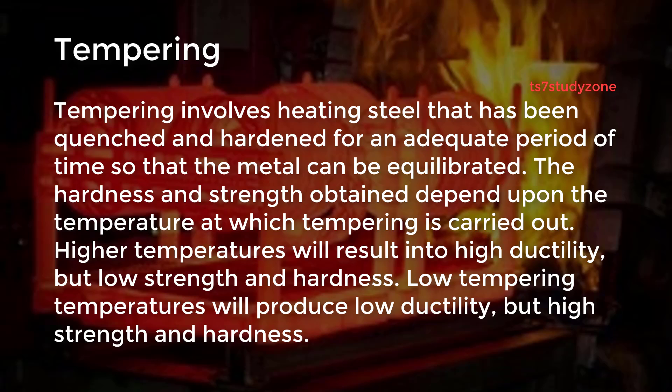Tempering involves heating steel that has been quenched and hardened for an adequate period of time so that the metal can be equilibrated. The hardness and strength obtained depend upon the temperature at which tempering is carried out. Higher temperatures will result in high ductility but low strength and hardness.